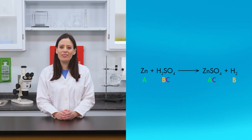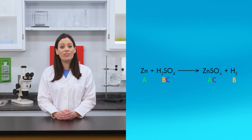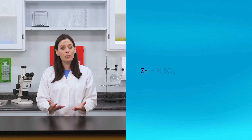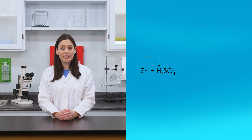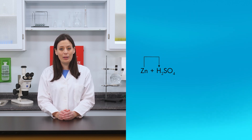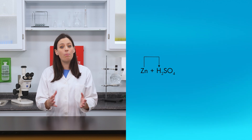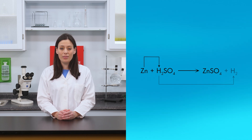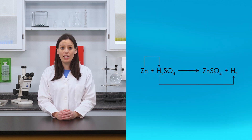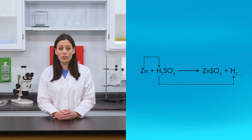An example of a single replacement reaction is the reaction of zinc with sulfuric acid. When zinc reacts with sulfuric acid, zinc ions replace hydrogen ions in sulfuric acid. Zinc ions then bond with sulfate ions to produce zinc sulfate. The hydrogen that was replaced is given off as hydrogen gas.